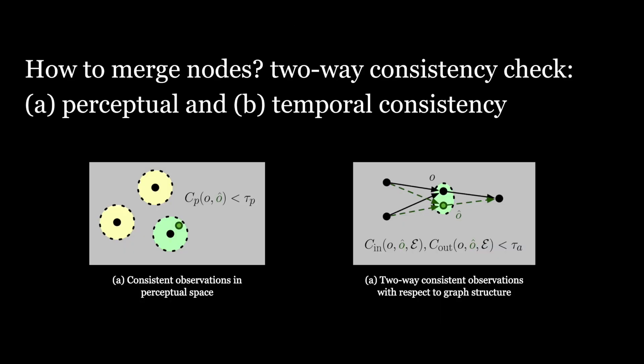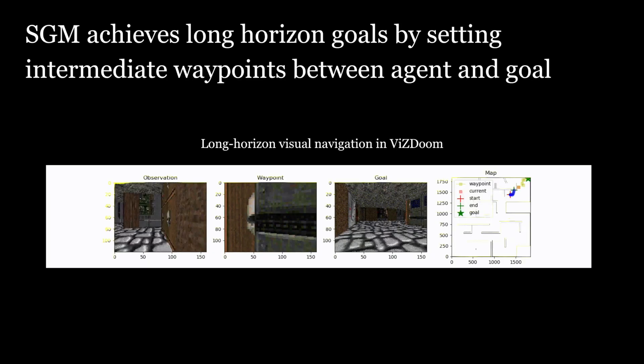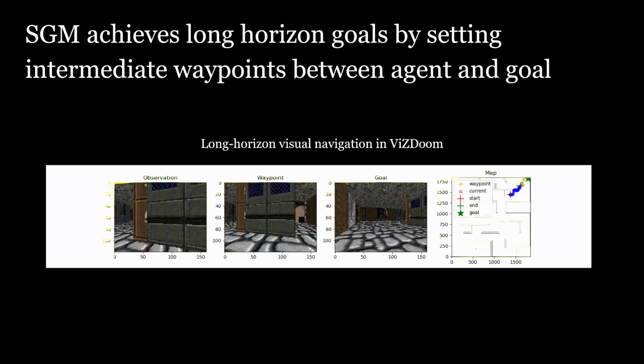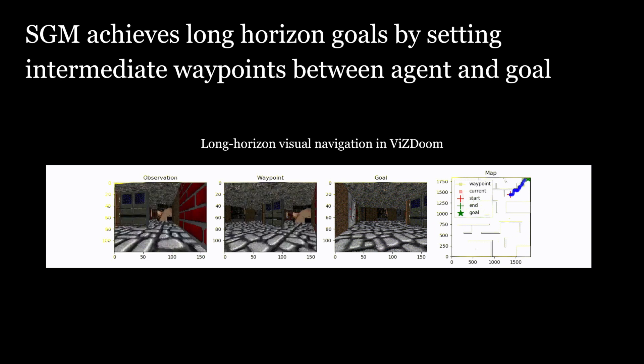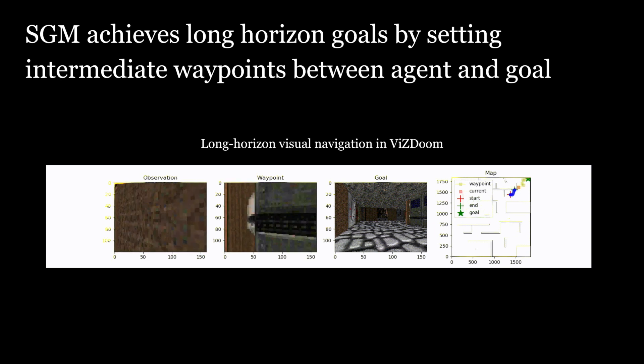Our key contribution is a node merging procedure that respects the temporal structure of the graph. We introduce a two-way consistency check: a node is only merged if it both passes a visual and a temporal consistency check with its neighbors. As a result, our method enables long-horizon planning in environments like VisDoom without any demonstrations.